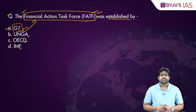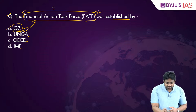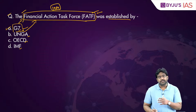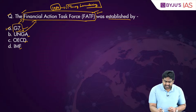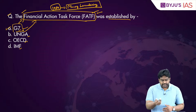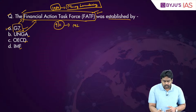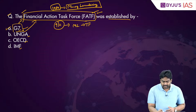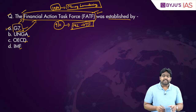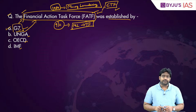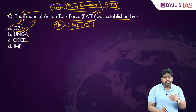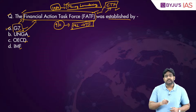The Financial Action Task Force is an intergovernmental body established in 1989 by the G7 countries. Its primary objective was to counter money laundering. Later, after the 9/11 attacks, a clear link was established between money laundering and terrorist financing, so the FATF's mandate was updated — it was given a second role to counter terrorist financing. These are the two primary objectives of the FATF: anti-money laundering measures and countering terrorist financing.